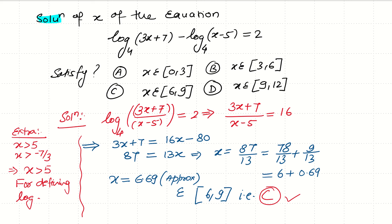For solving this question, we have to find the solution of x which satisfies which of the following options A, B, C, or D. For defining log, x must be greater than negative 7/3 and x must be greater than 5. So ultimately, x must be greater than 5 for defining log. Now we can solve this.